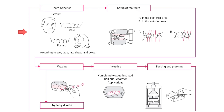You can then start with the arrangement of teeth with the selected size, shape, and shade depending on dentogenic factors. After finishing teeth arrangement, you ask the patient for a try-in appointment and evaluate aesthetics, phonation, as well as very light contact of maxillary and mandibular teeth. Make sure the patient does not bite hard at this time, and make corrections if required.